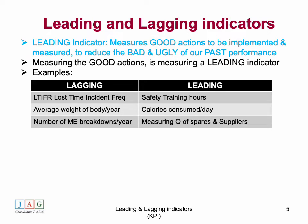Here are some examples of lagging and leading indicator pairs. LTIFR as a lagging indicator can be balanced with measuring safety training hours for ship personnel or senior officers. Average body weight per year as a lagging indicator can be balanced with calories consumed per day. Number of main engine breakdowns per year as a lagging indicator can be balanced with measuring the quality of spares and suppliers, since poor spare quality can be a reason for main engine breakdown.